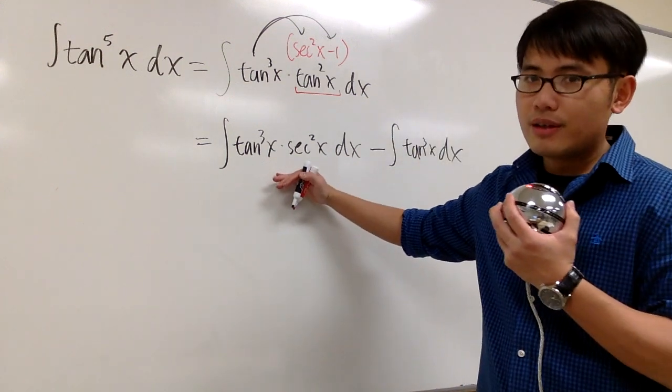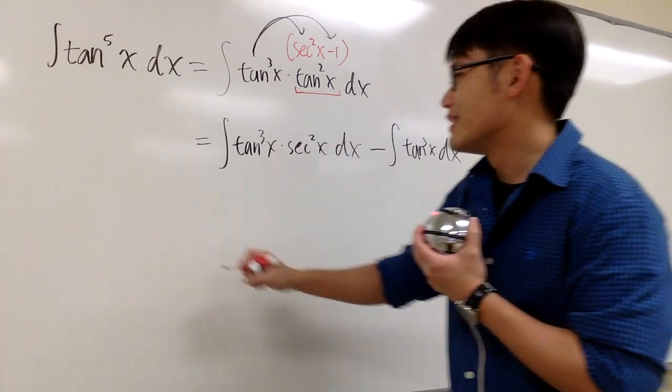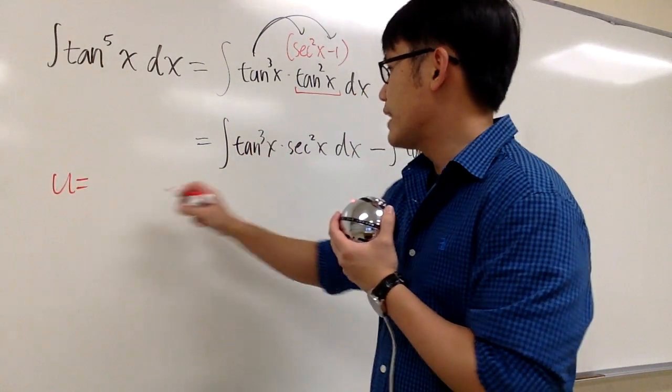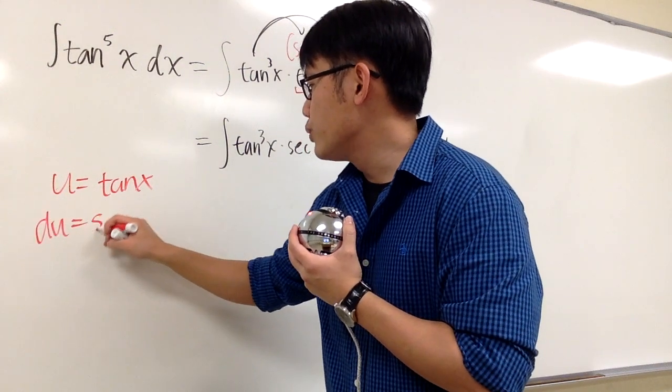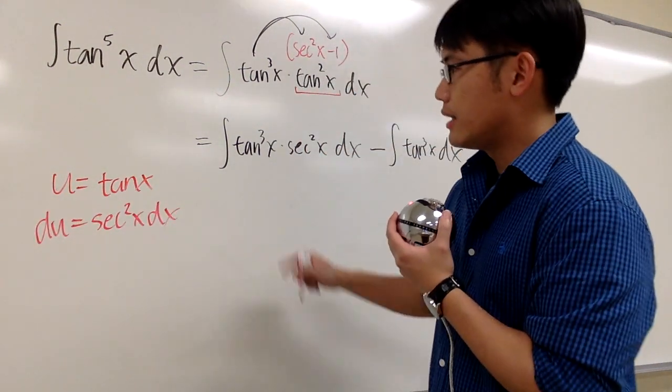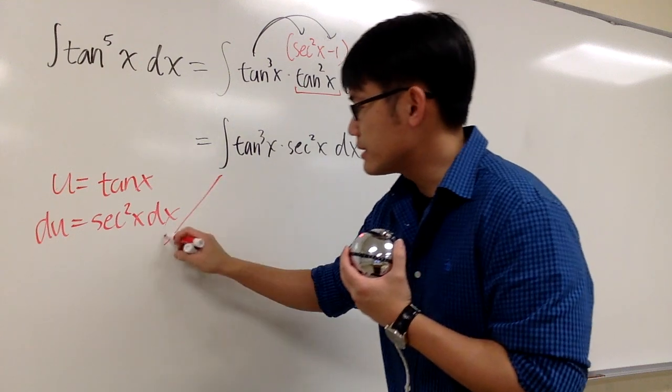This right here, we can do it by u substitution. So we'll let u equal to tangent. And then we can get immediately du is equal to secant squared x dx.